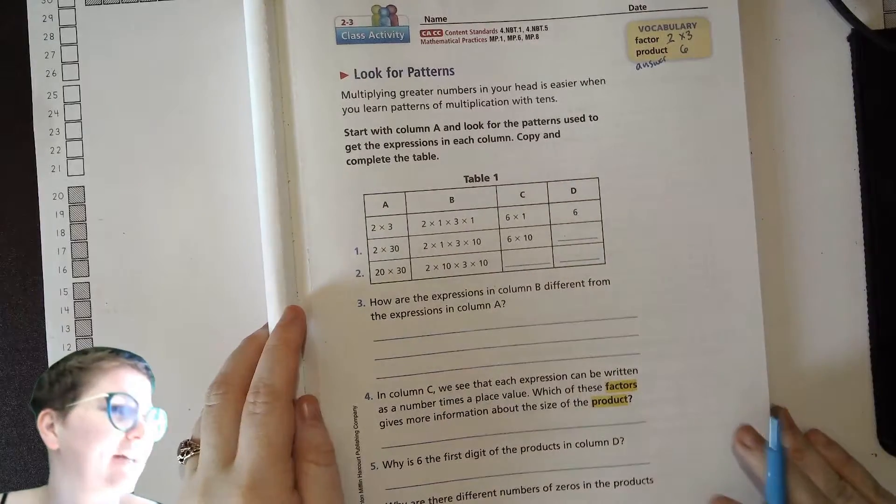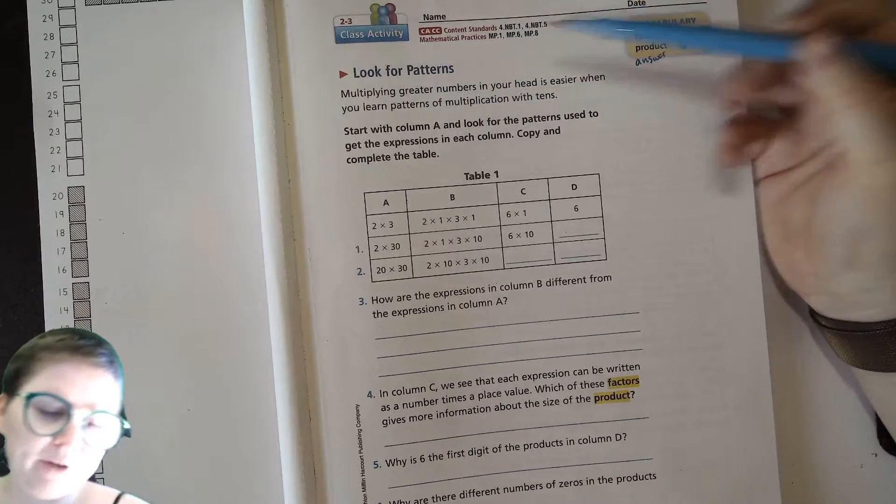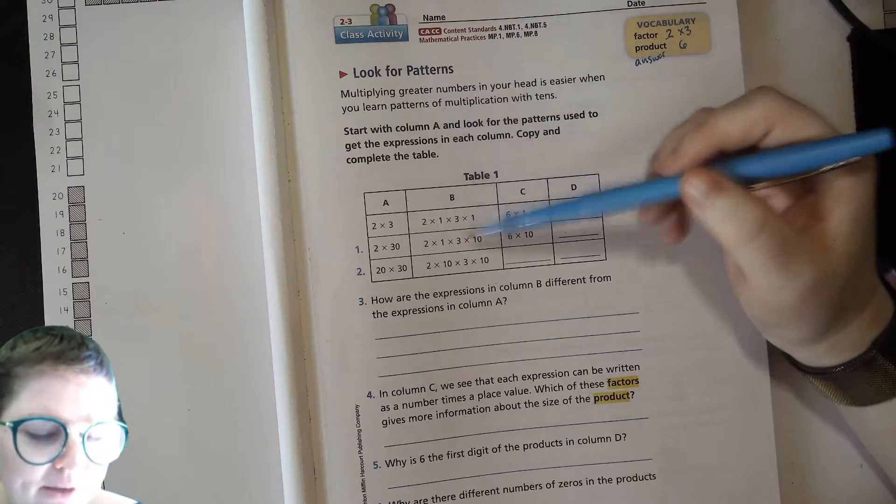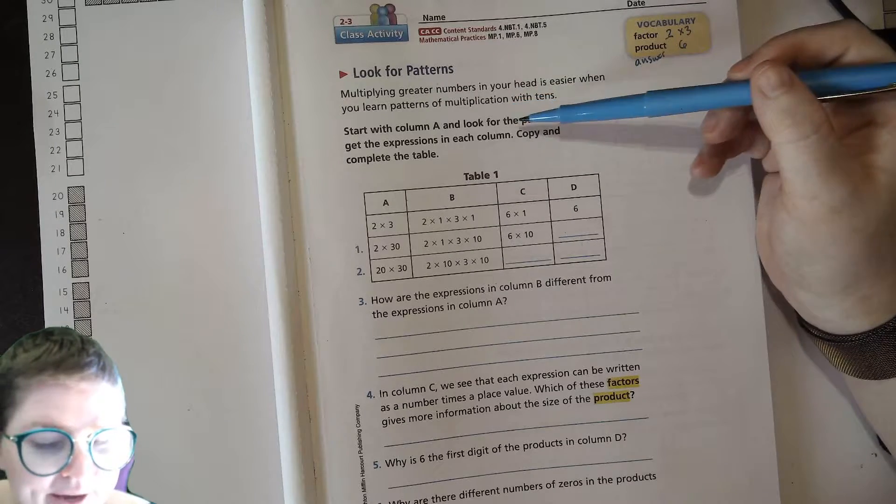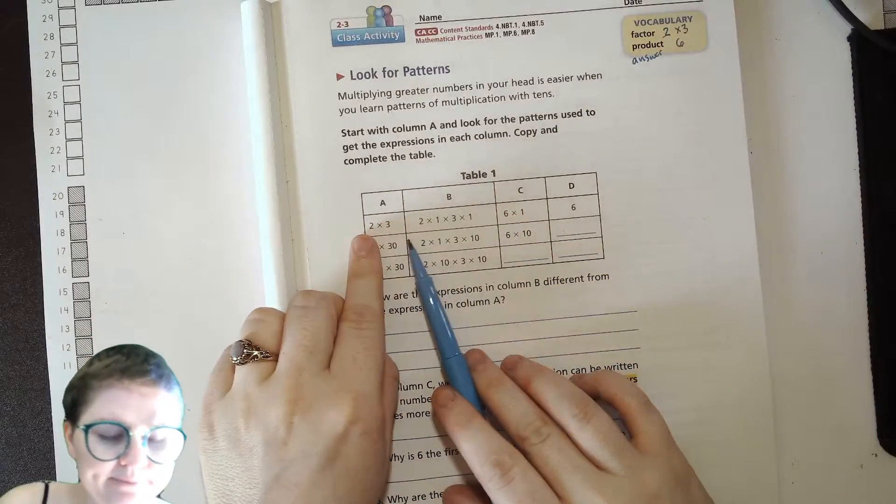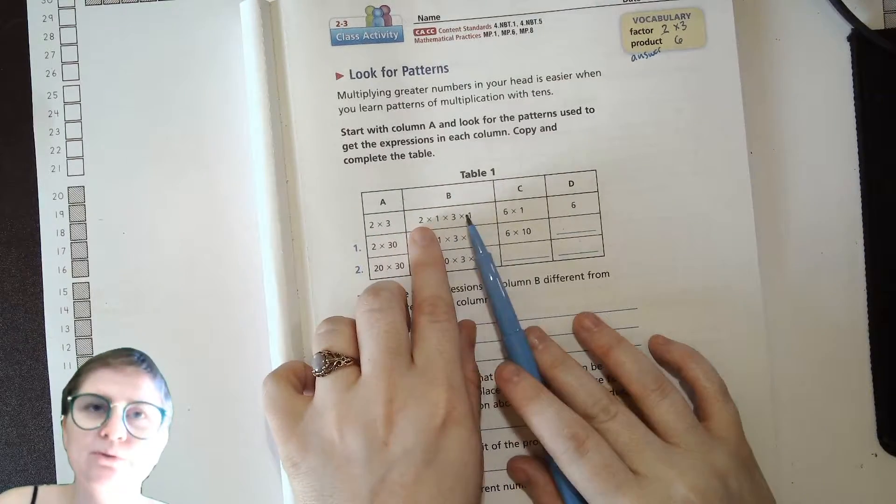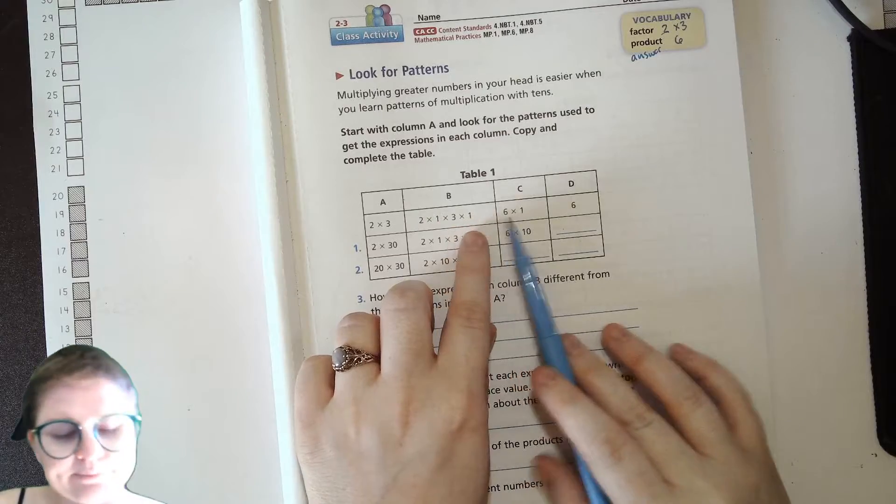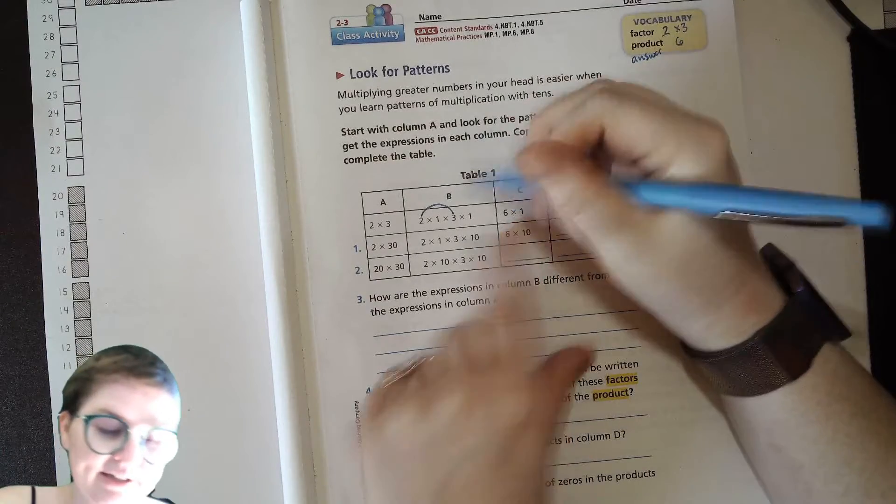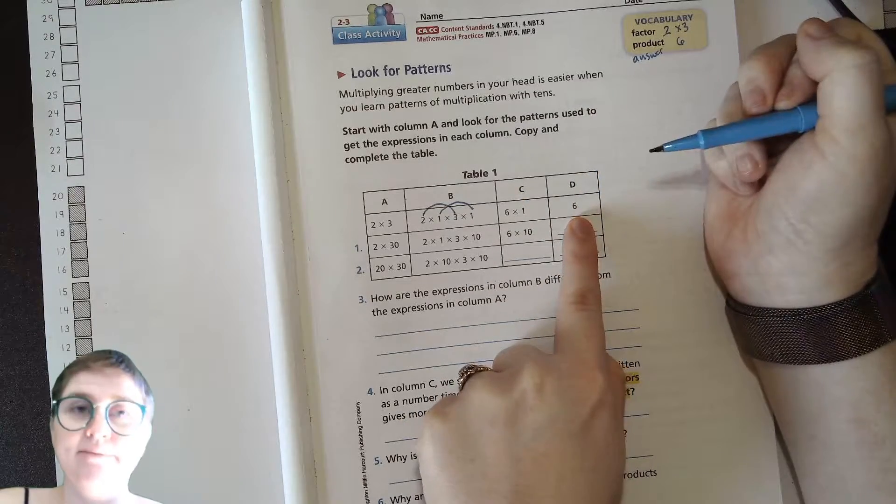Alrighty, so here we go. It says look for patterns. Multiplying greater numbers in your head is easier when you learn patterns of multiplication with tens. Start with column A and look for the patterns used to get the expressions in each column. Copy and complete the table. So for 2 times 3, these are both numbers that only have something in the ones place, right? So then you take your 2 and your 3 and you get 6 when you multiply that together, and your 1 times 1 and you get 1, and 6 times 1 is just 6.